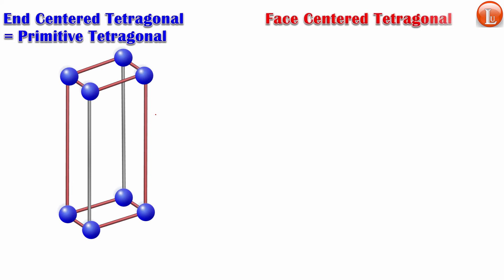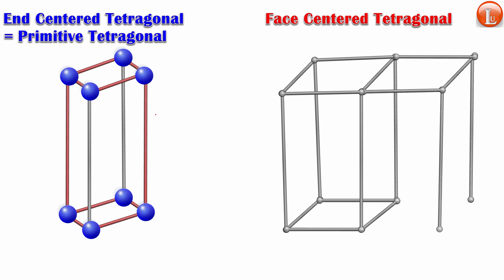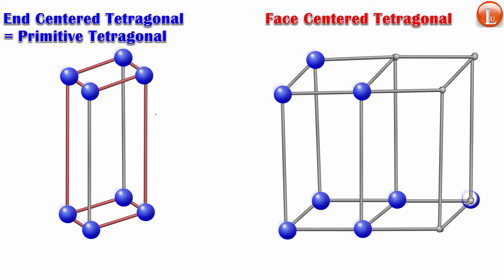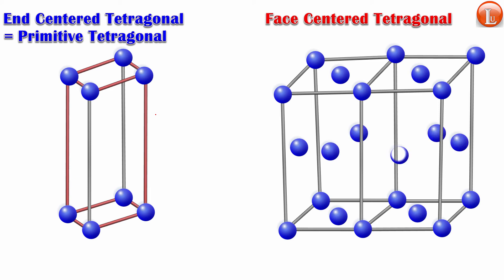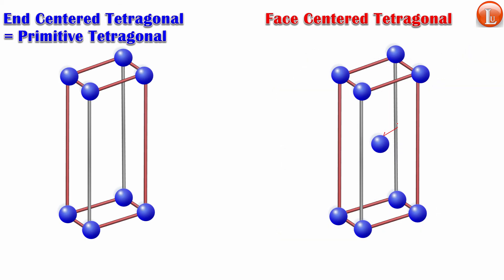Similarly, face-centered tetragonal has atoms at all corners and at the center of every face — top, back, front, right, left, and middle. Looking at the alternative unit cell within this arrangement, notice the atom in the very middle — it's not primitive. It is body-centered tetragonal, and it is smaller in size. Again, size is deciding here. So face-centered tetragonal equals body-centered tetragonal.